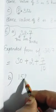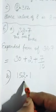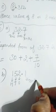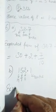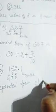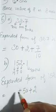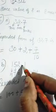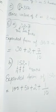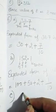Part B: the number is 152.1. Positions are ones, tens, hundreds, and tenths. Expanded form of 152.1 is: 2 ones is 2, 5 tens is 50, 1 hundred is 100, then the decimal becomes plus, and 1 tenths is one over ten. So: 100 + 50 + 2 + 1/10.